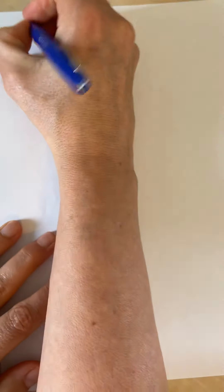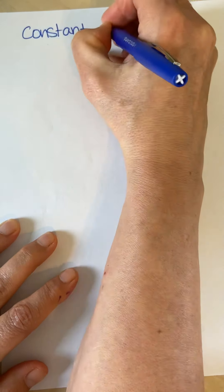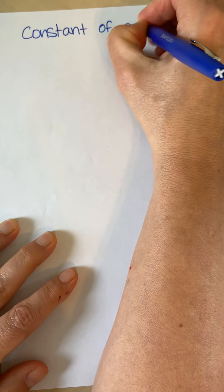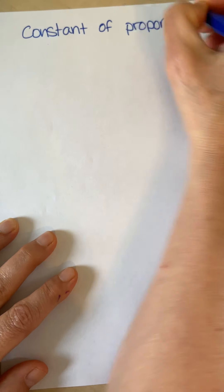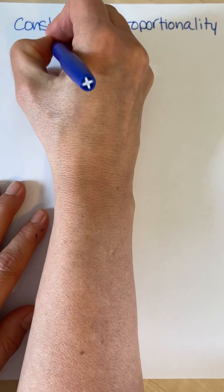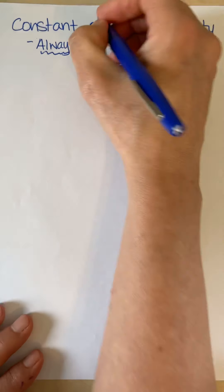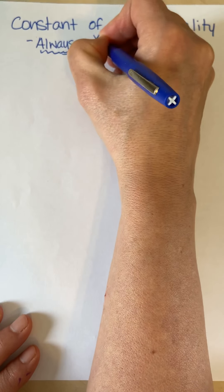So first of all, the constant of proportionality — I want you to know what it means. It sounds a lot harder than it is; the wording is way harder than it really is. What it means is it is always Y over X, no matter what the letters are. Even if I use distance and time — D and T — it's always Y over X.